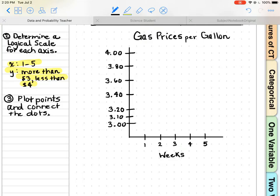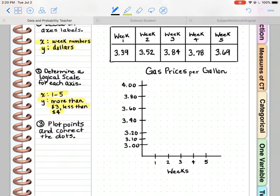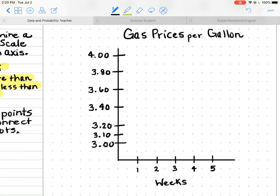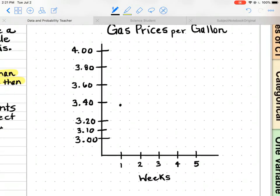Let's plot some points. Week one, gas was $3.39 per gallon, so that's going to be just under $3.40. We're just going to have to estimate here. I'm going to go just under that $3.40 line. Week two was $3.52, so here would be $3.50. We want to go just a hair over that. I'm going to plot it right about there. I know it's not exact, but it's close. It's a good estimate.